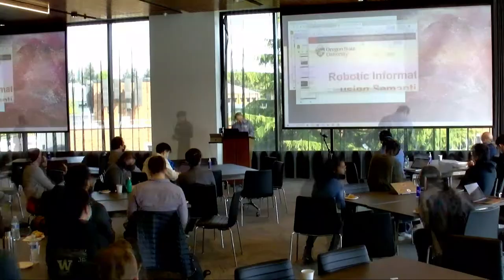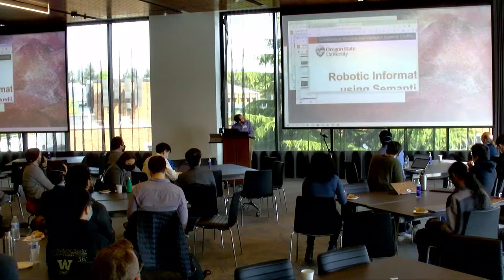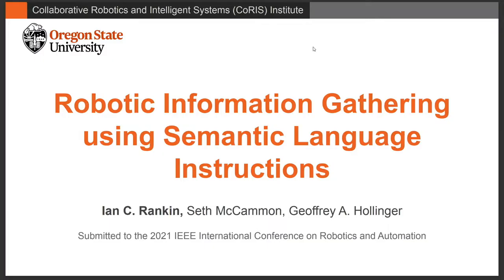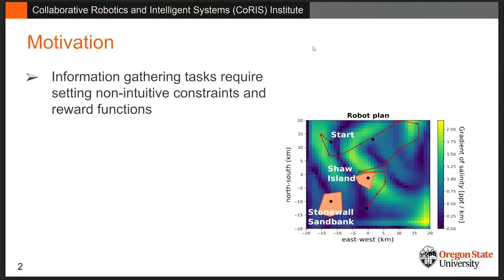Hello everyone. My name is Ian Rankin. I'm with Dr. Hollinger at OSU. I'll be talking about using language instructions to generate constraints for scientific data collection robots. One example from the marine domain is where ocean scientists study coastal upwelling fronts and need to design robot plans that collect the most useful information. We can think about this problem as a graph where a robot tries to collect information about the environment subject to some budget.